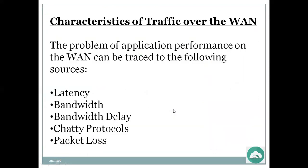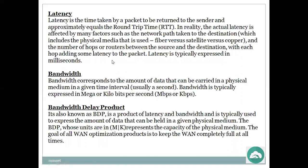Characteristics of traffic over the WAN — theoretical background needed before configuring any WAN optimizer, whether VM or physical appliance. The problems of application performance on the WAN can be traced to the following sources: latency, bandwidth, bandwidth delay product, chatty protocols, and packet loss. Latency is the time taken by a packet to be returned to the sender, approximately equal to the round trip time, or RTT.